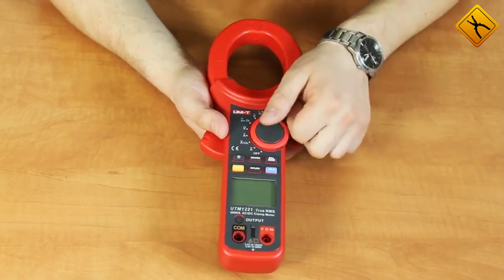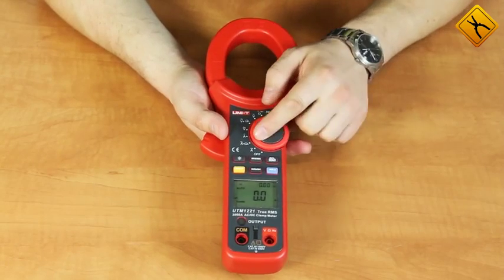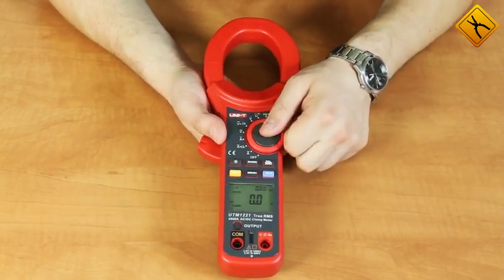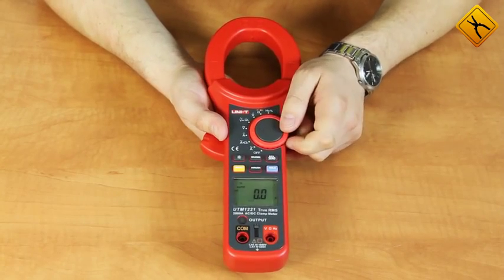To turn on the meter, use the rotary switch. Measuring functions are as follows: AC current, AC current with low frequency filter, and DC current.